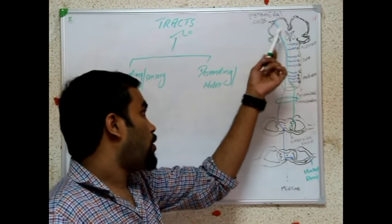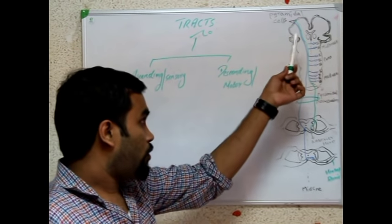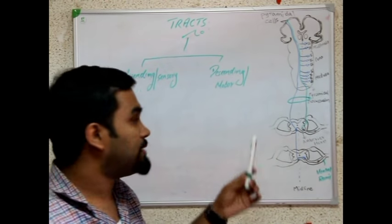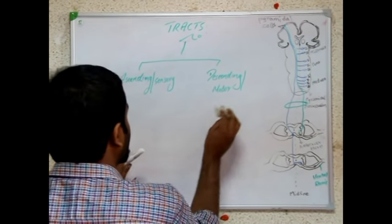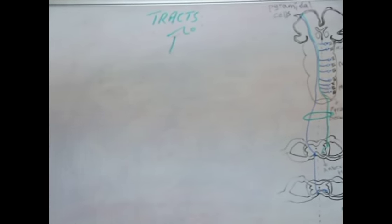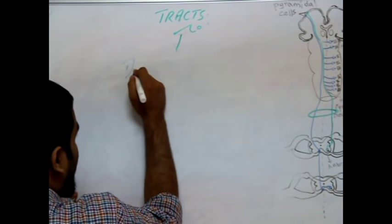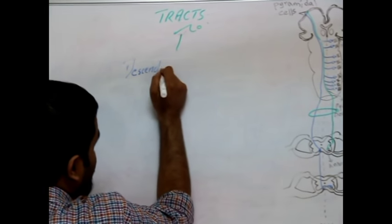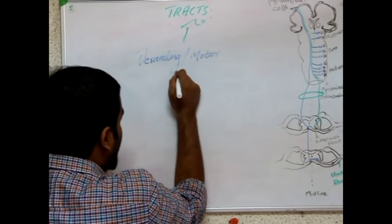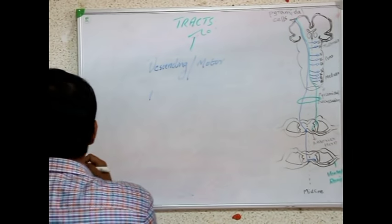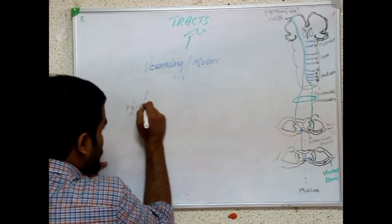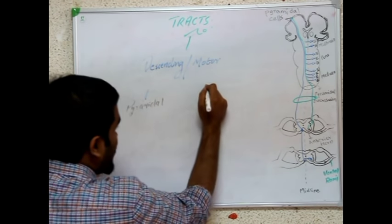In this video, we are mainly focusing on descending or motor tracts. Motor tracts follow two pathways: the pyramidal system and the extrapyramidal system. Descending or motor tracts are again divided into pyramidal and extrapyramidal.